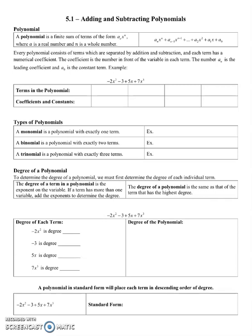This is the video for section 5.1, and we're going to talk about adding and subtracting polynomials. A polynomial is a finite sum of terms of the form a sub n times x to the nth power, where a is a real number and n is a whole number. Every polynomial consists of terms that are separated by addition and subtraction, and each term has a numerical coefficient.